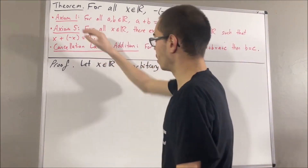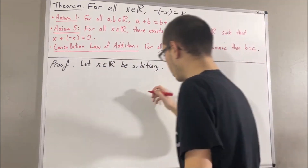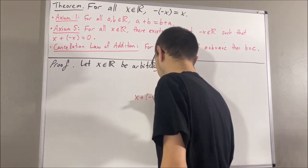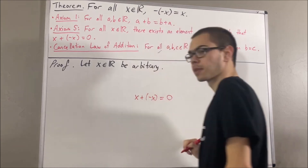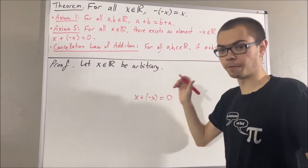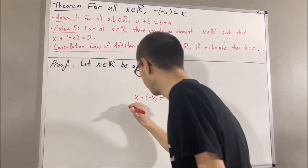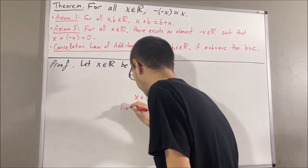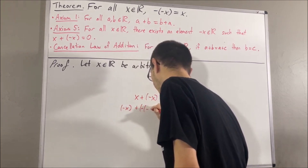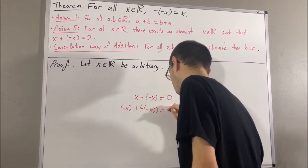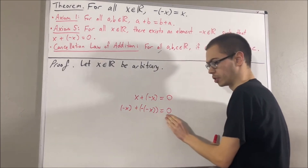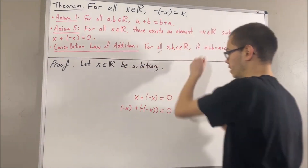If we apply Axiom 5, we know that x plus the negative of x is equal to zero. We can also apply Axiom 5 to the negative of x: the negative of x plus the negative of negative x is equal to zero. Any real number plus its negative is equal to zero — that's what Axiom 5 tells us.